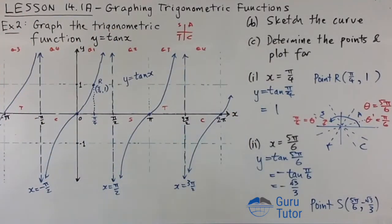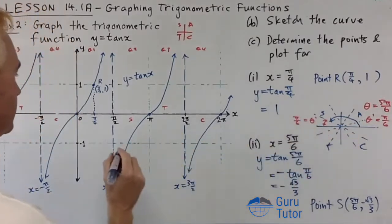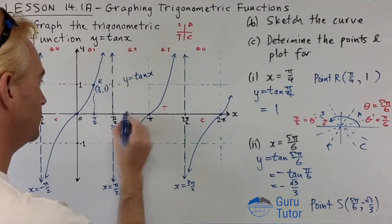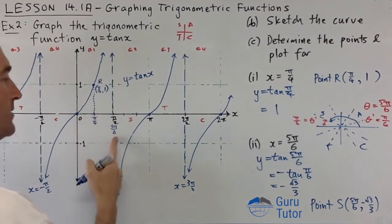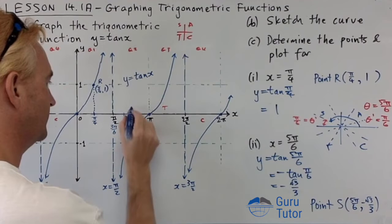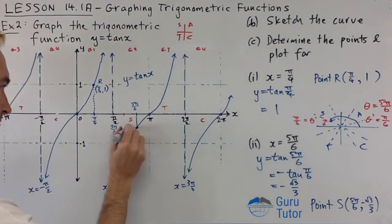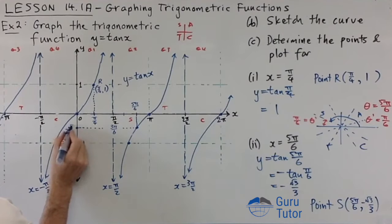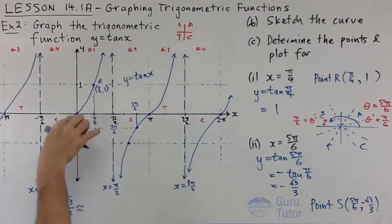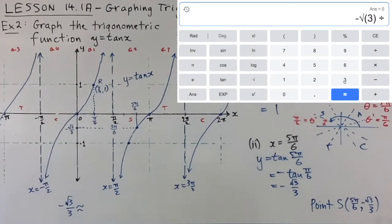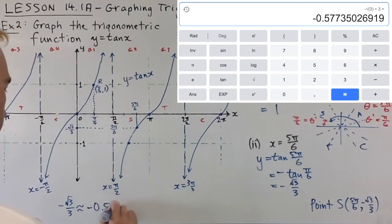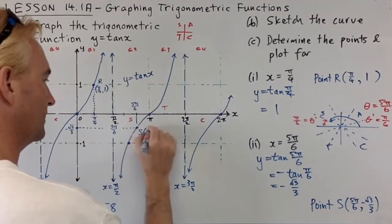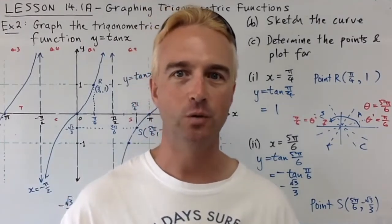Locating 5π/6 on the graph: splitting the interval into sixths, 5π/6 is four steps past π/6. The y value −√3/3 ≈ −0.58, so just below −0.5. Plotting that point gives us point S on the graph, confirming it lies on the correct branch of the tangent curve.